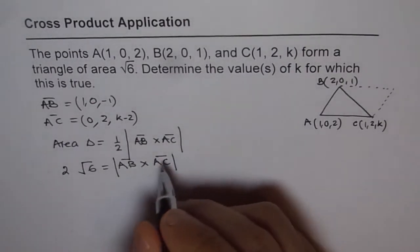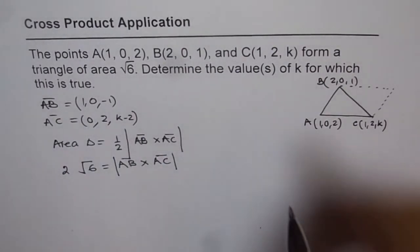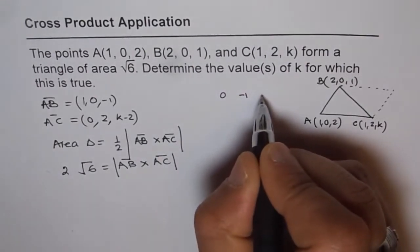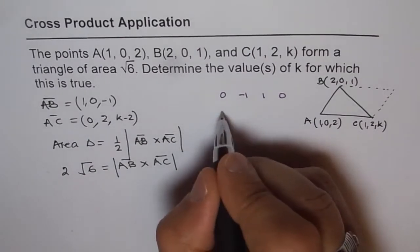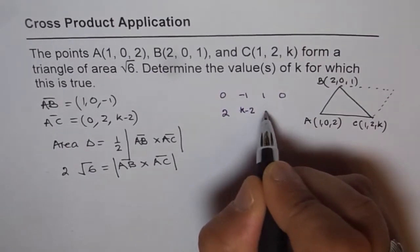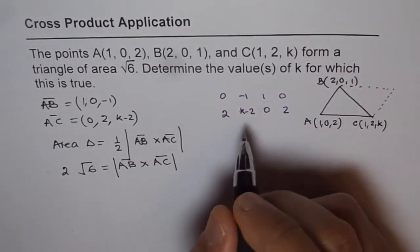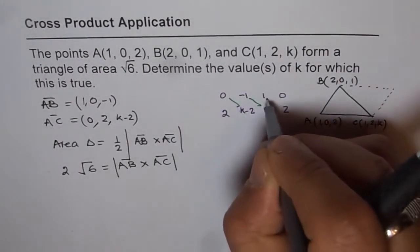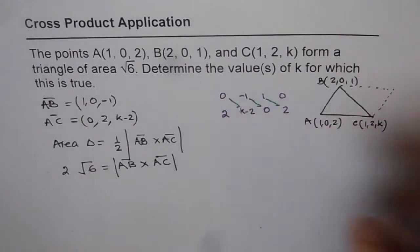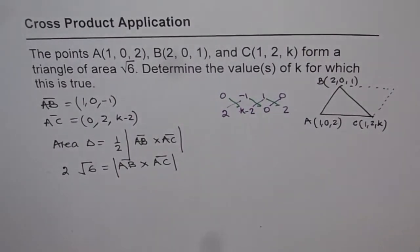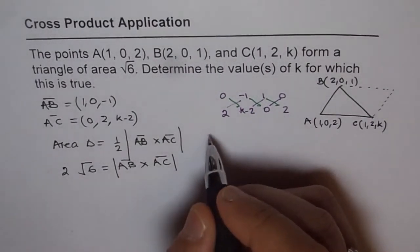We will follow the cross product method by writing these numbers in matrix form. Start with the center: 0, -1, 1, ending with that center number; then 2, k-2, 0, 2. When you do this, we multiply in this direction with positive sign, then subtract the other direction to get our i, j, k components.